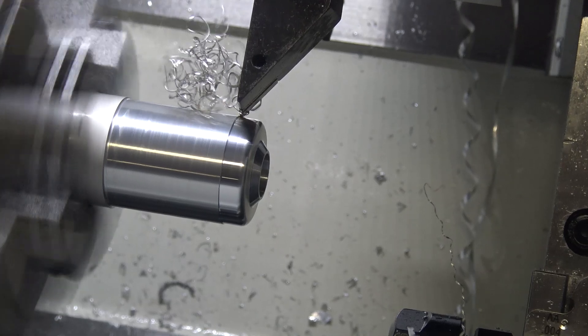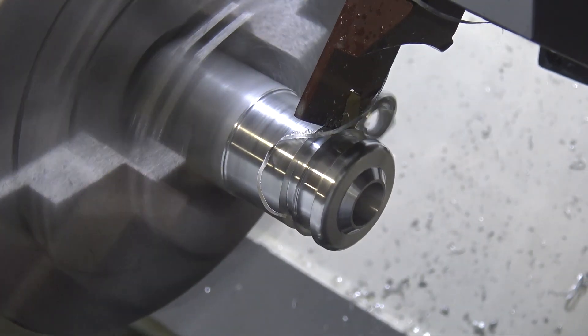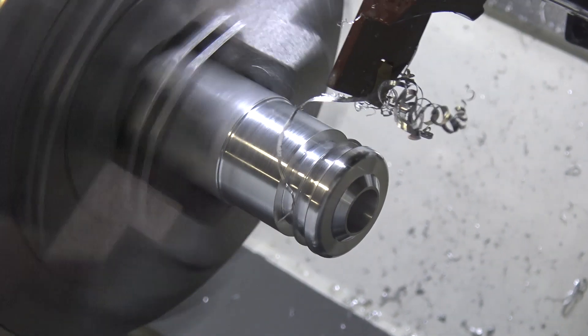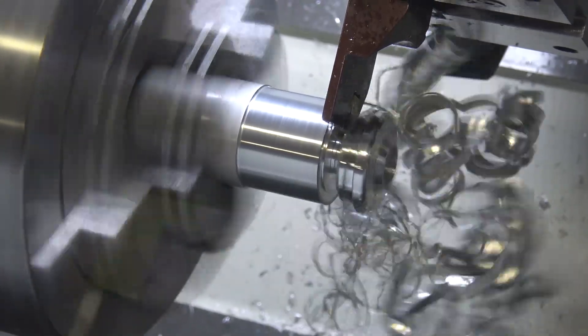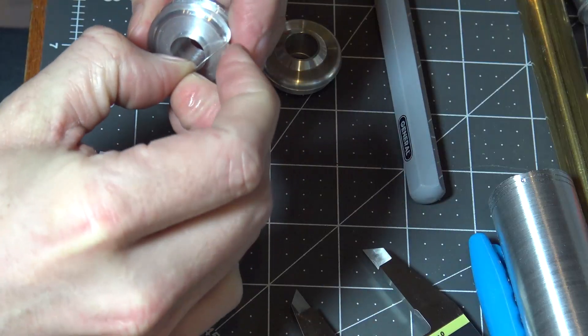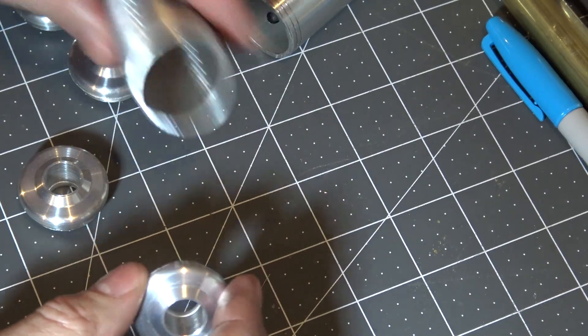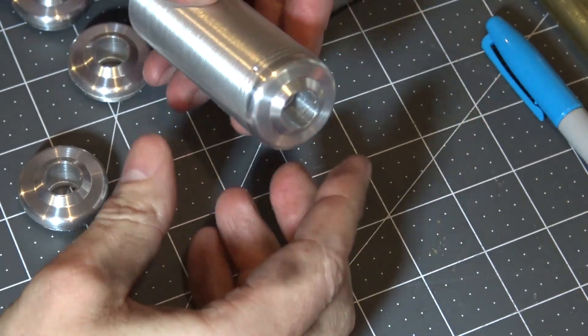Here's the cutoff tool doing the chamfer. It just leaves a little ring there. Then I'm using the same cutoff tool just to actually part it. Alright guys, cool. Here's the first part. Fits on there perfect.